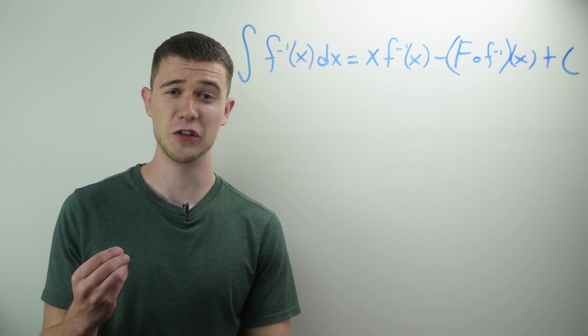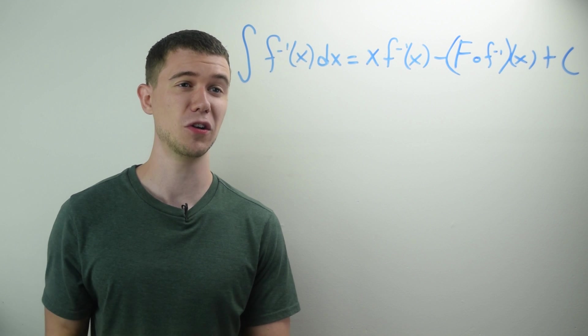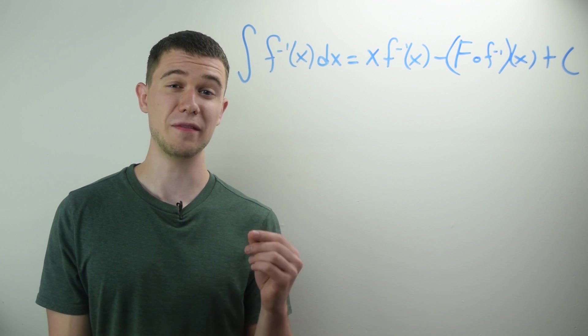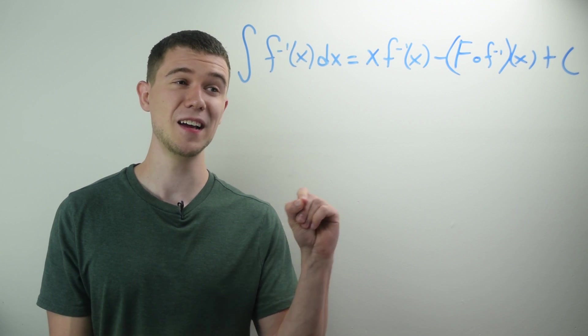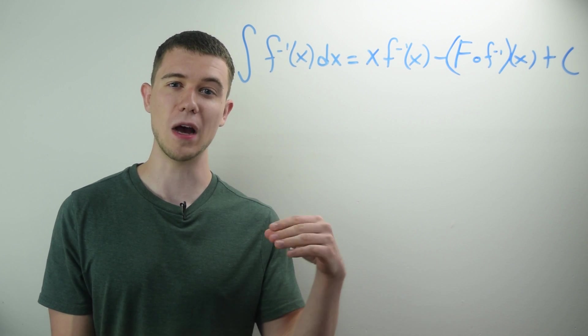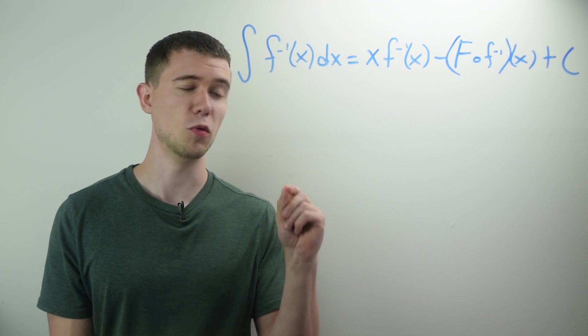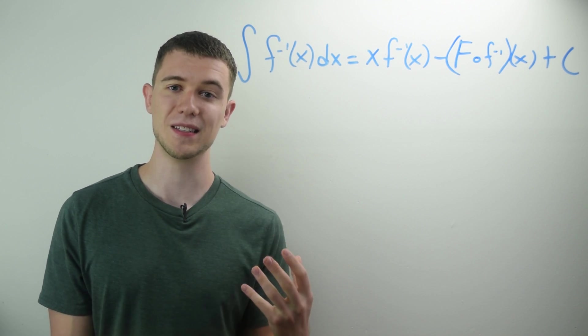My first integration trick is a formula for integrating any inverse function, and you can see here it is. The antiderivative of f inverse of x is x times f inverse of x minus capital F, so that would be the antiderivative of the original function, composed with f inverse of x plus c.